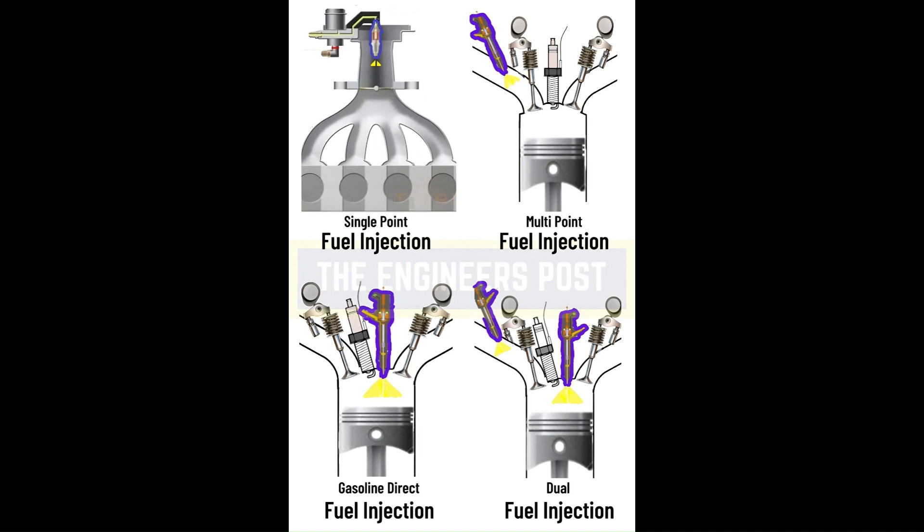This resistance results in pumping losses, where energy is wasted in drawing air into the combustion chamber, especially at part load conditions. Throttle Losses: In spark ignition engines, the throttle plate controls airflow into the engine. When partially closed, it creates a vacuum, requiring more energy to draw air into the cylinders, contributing to additional energy waste.